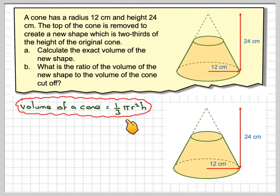So here we've got our shape. The volume of a cone is 1/3 π r² h. It's one-third of the base area times the height. We know this cone is 12 and the height is 24.